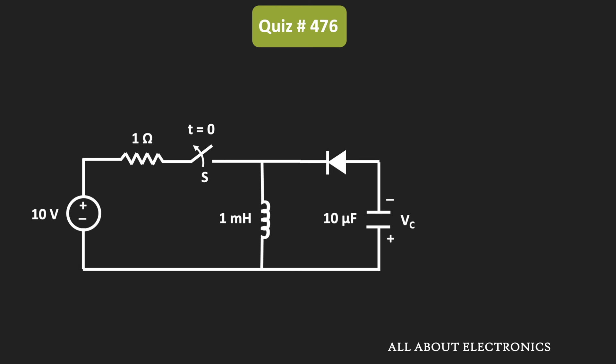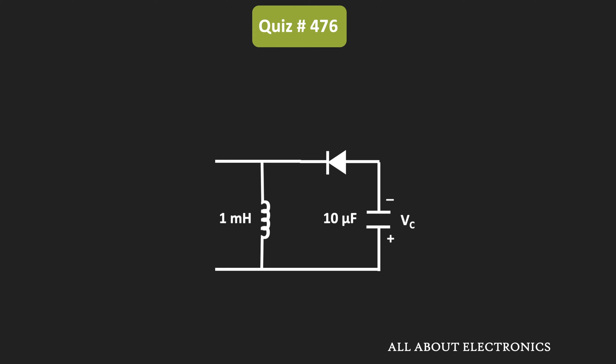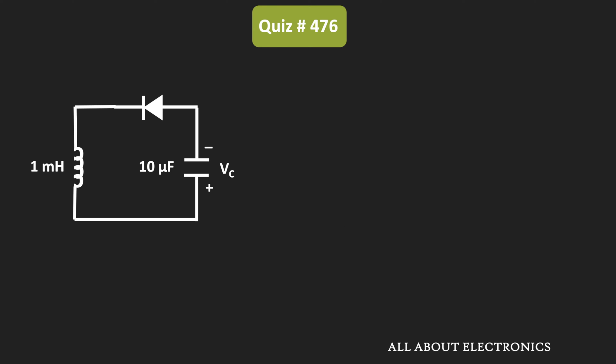At time t equal to 0 plus, this switch will get opened, so we will have the remaining circuit. To find the steady-state voltage across the capacitor, we can apply KVL in the given loop and solve the resulting differential equation, or the second and easier way is to represent this circuit in the S-domain and use the Laplace transform. We will use the second method, so first let us find the equivalent S-domain circuit.